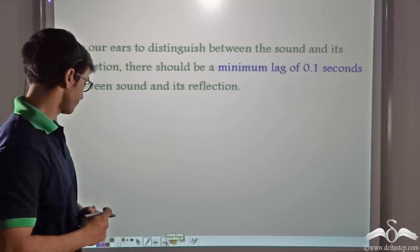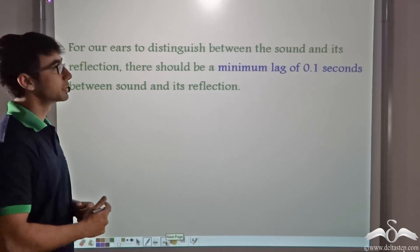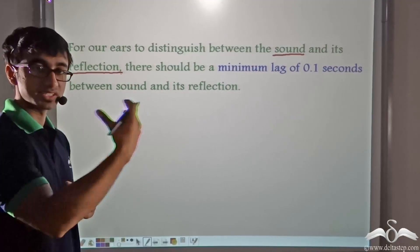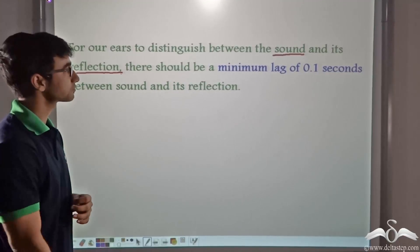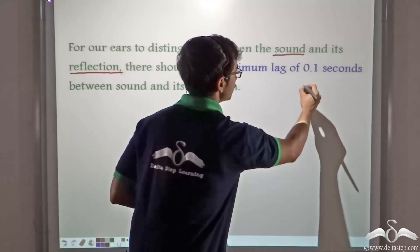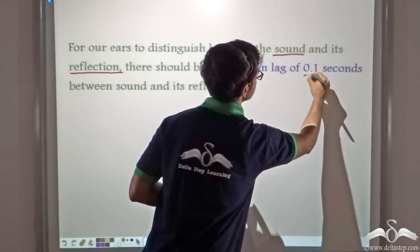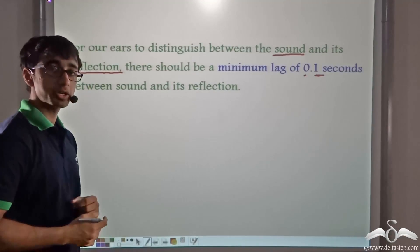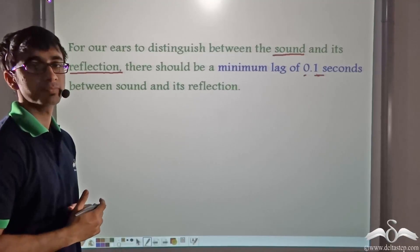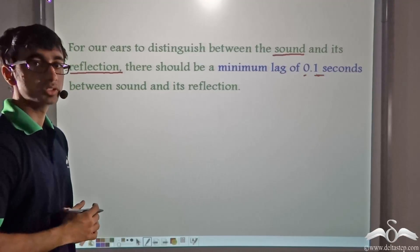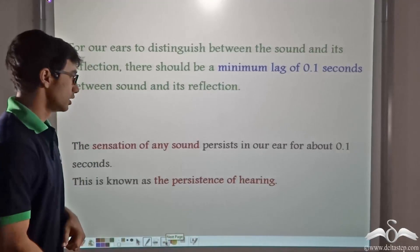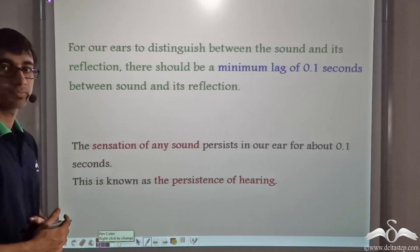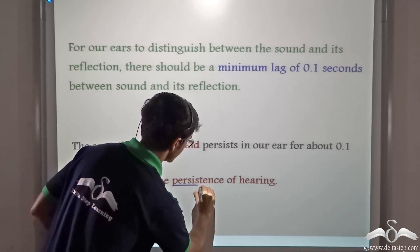Let us get into the science behind this. For our ears to distinguish between the sound and its reflection — that is, to distinguish the sound that we say and the sound that is reflected back off an obstacle — there should be a minimum lag or a minimum gap of 0.1 seconds between the sound and its reflection. If the gap is less than 0.1 seconds, we will not be able to distinguish between the two sounds. But if it is more than 0.1 seconds, we will be able to distinguish between them. The sensation of sound persists in our ear for about 0.1 seconds. This is known as the persistence of hearing.